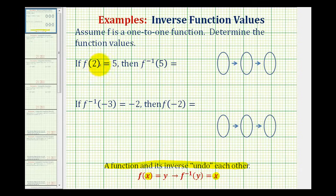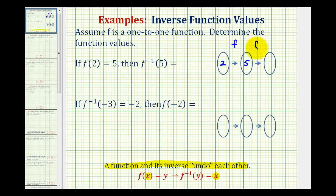So if f of two equals five, two is the input into f and five is the output. If we wanted to show this mapping, if we let this be function f, the input would be two and the output would be five. Then to determine f inverse of five, notice how the output of f is becoming the input into f inverse. Therefore, f inverse will return the original value of two. Notice f and f inverse undo each other because the original input into f and the output of f inverse are the same.